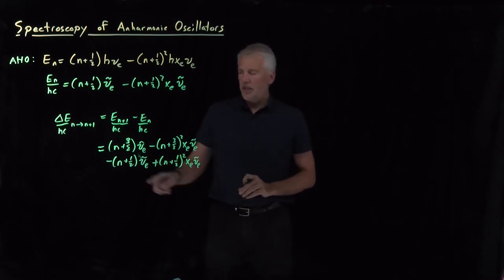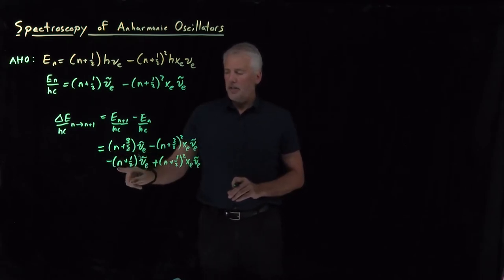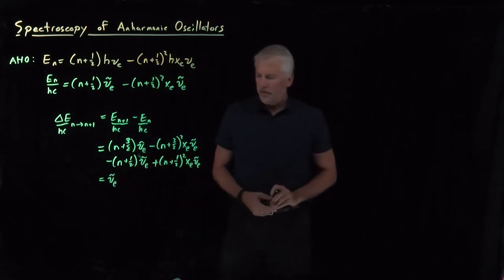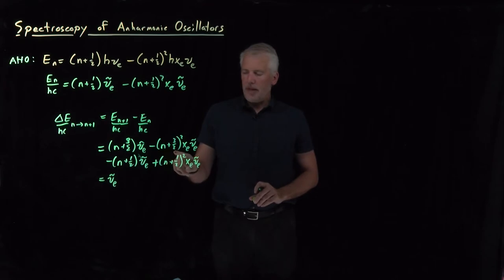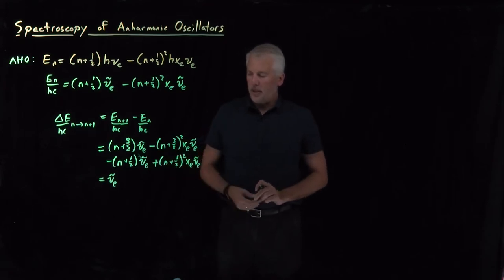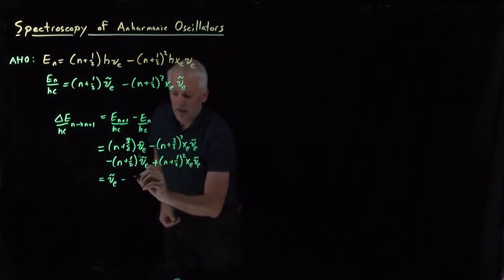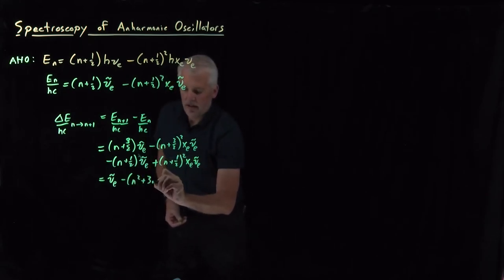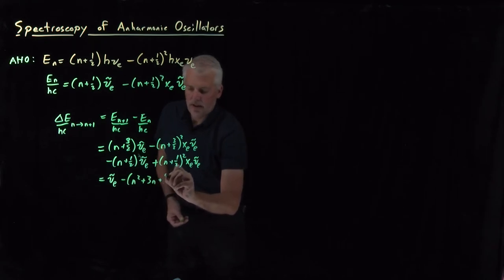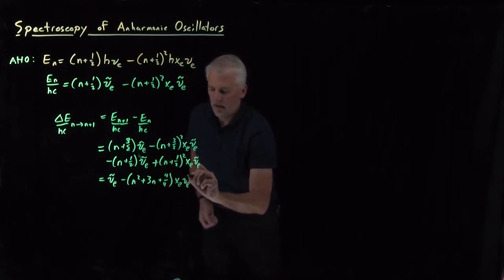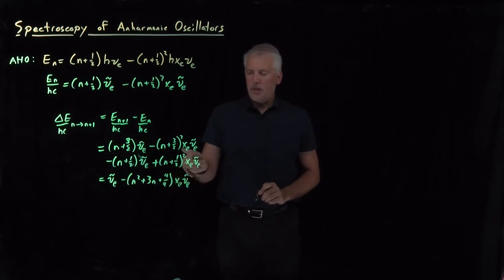There's some cancellation that happens here. n times nu-tilde minus n times nu-tilde cancel, leaving just 3 halves minus 1 half, or one factor of nu-tilde. A little bit of algebra is needed to take the quantity (n plus 3 halves) squared minus (n plus 1 half) squared, all times x_e nu-tilde_e. Squaring n plus 3 halves gives n squared plus 3n plus 9/4.